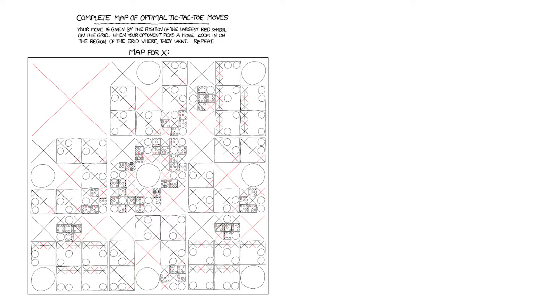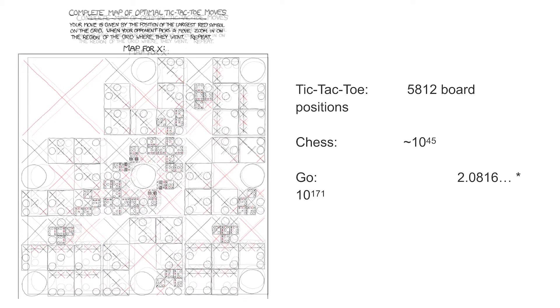The problem is this doesn't actually work for larger games like chess and Go. Tic-tac-toe has about 6,000 board positions, but chess has 10 to the 45 and Go has 10 to the 171. If you only have to write 6,000 if statements that's not so bad, but if you need to write enough if statements for all of the atoms in the universe and then a lot more than that, that's just physically impossible to do.